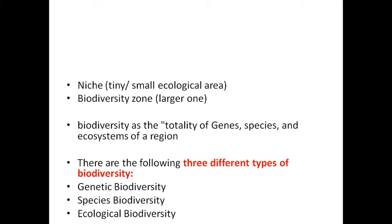The biodiversity zone holds the totality — a holistic approach — encompassing the totality of genus, species and ecosystem diversity of a particular region. Biodiversity includes three things: genetic diversity, species diversity and ecological diversity.